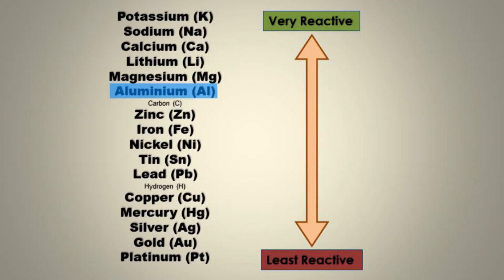So, aluminum is more reactive than Zn, which is more reactive than Fe, which is more reactive than Cu.